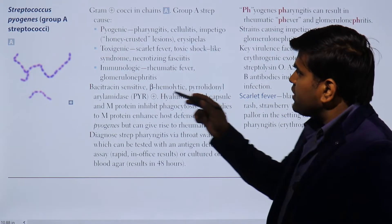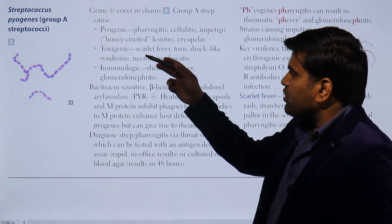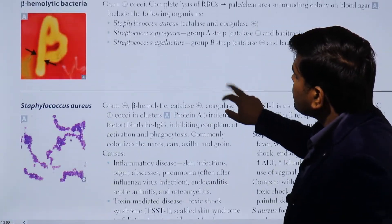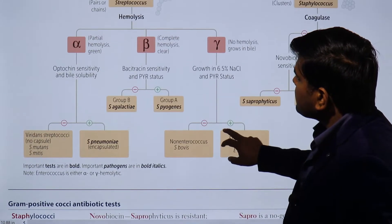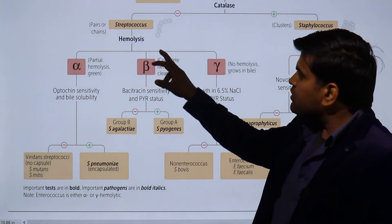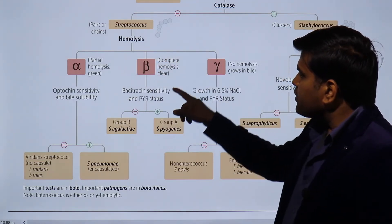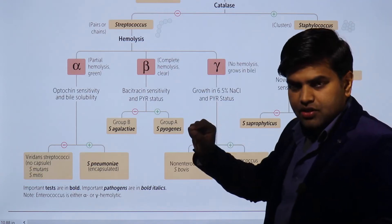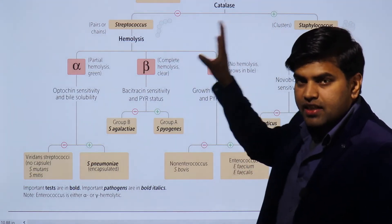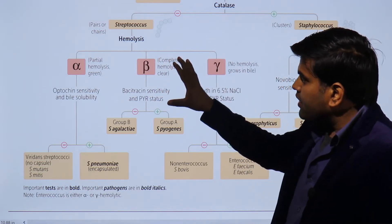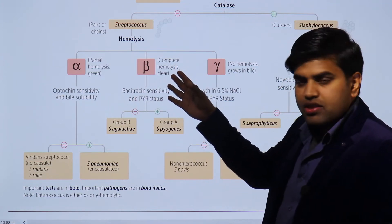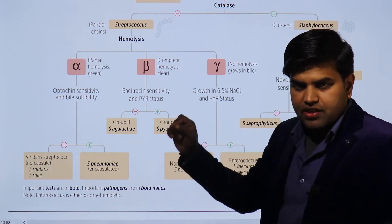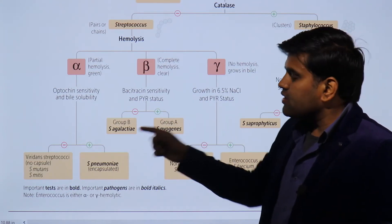Streptococcus pyogenes is a gram-positive coccus in chains. It is catalase negative. In the classification of gram-positive cocci that are catalase negative in a chain or pair, if it shows complete hemolysis it can be either Streptococcus pyogenes or Streptococcus agalactiae. These can be differentiated by the bacitracin sensitivity test — bacitracin sensitive is Streptococcus pyogenes, and bacitracin resistant is Streptococcus agalactiae.